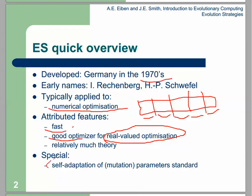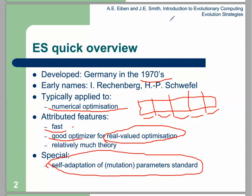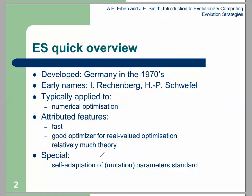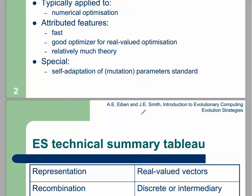The most important part of ES is mutation, in contrast to GA where the most important part is crossover. In ES the most important part is mutation, and the key specification of mutation is named self-adaptation. Self-adaptation is one of the most important attributes of ES, and it can solve real problems better than another type of evolutionary algorithm.